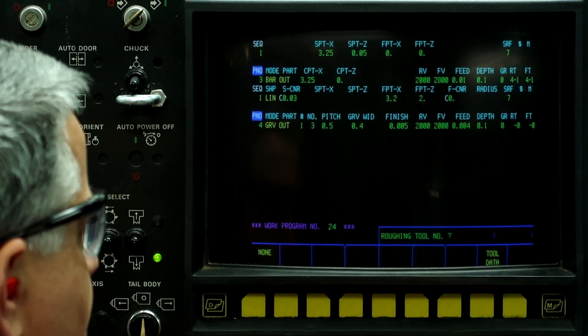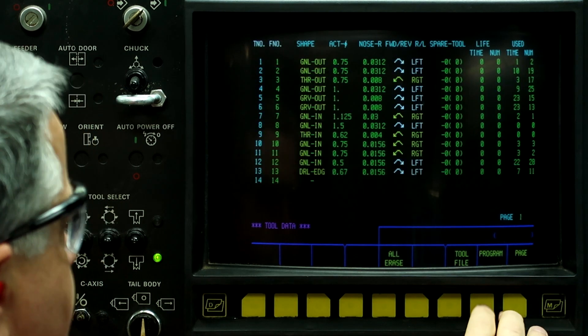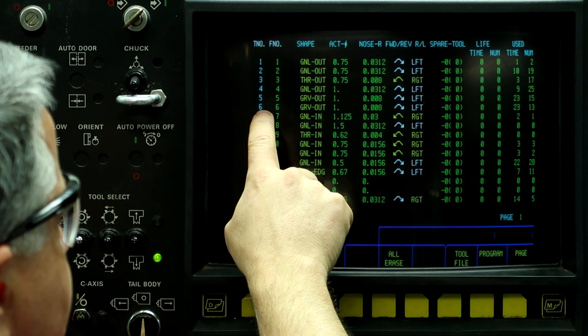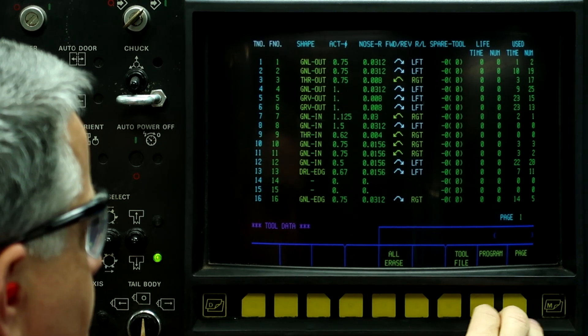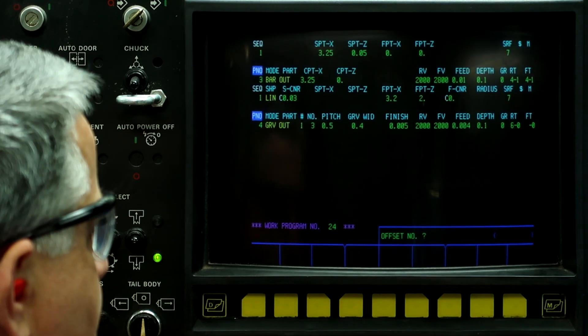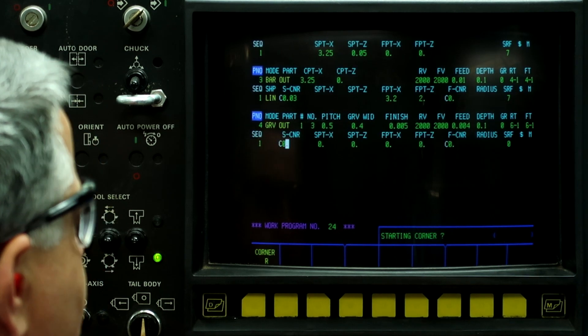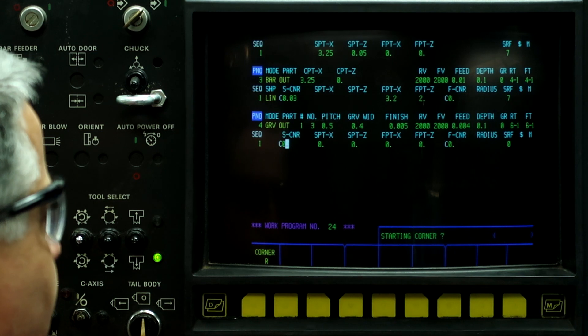Roughing tool, we're going to go to the tool data screen, and we're going to select the groove out with number six. Go back to program six, offset one, finish it with six, offset number one.